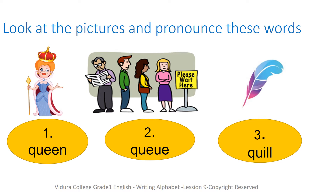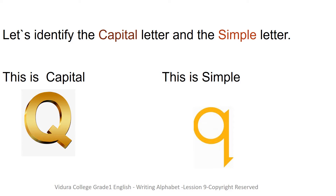Did you hear the sound? What is the sound you hear at the beginning? Now let's identify the capital letter and the simple letter. We saw pictures for the letter Q, and there are two Qs. The first letter is capital Q. The second is the simple Q. Can you show me the capital Q? Yes, it's the first letter. Can you show me the simple Q? Yes, it's the second letter. Very good.